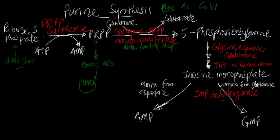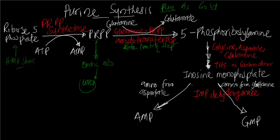What will be the fate of this 5-phosphoribosylamine? Through multiple steps, we want to add glycine, aspartate, and glutamine. We also require folate here to donate carbon to this reaction, and we form inosine monophosphate (IMP). From IMP we can make AMP, which is adenosine monophosphate, or we can make guanosine monophosphate (GMP) by the help of IMP dehydrogenase. The nitrogen to make GMP is from glutamine, and to make AMP is from aspartate — so G for glutamine and A for aspartate.